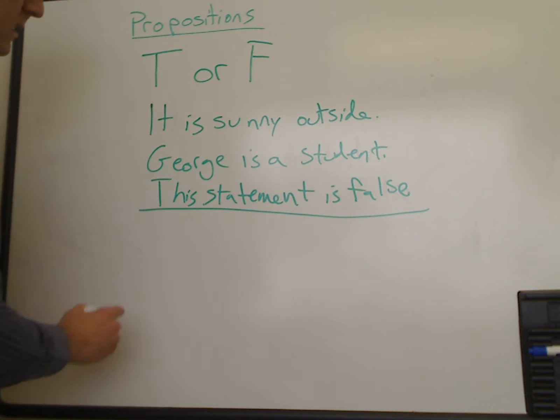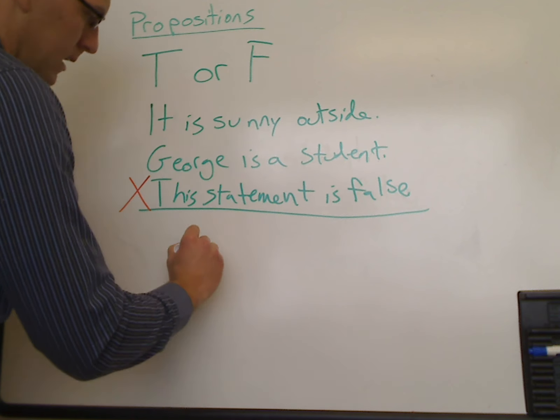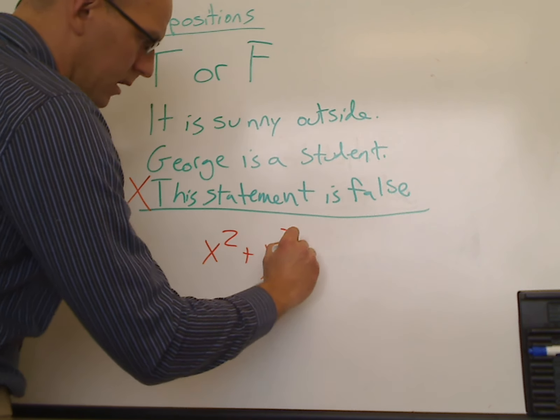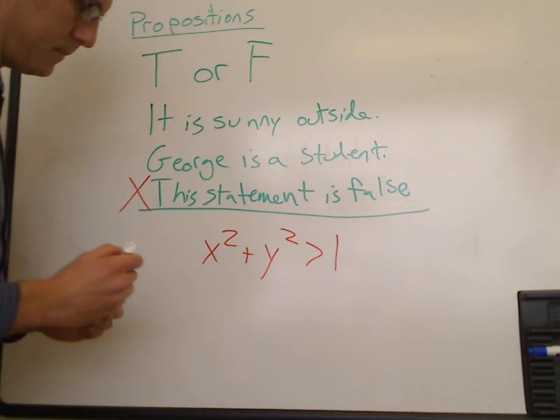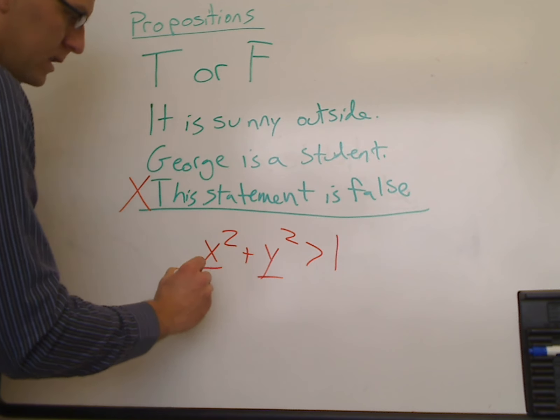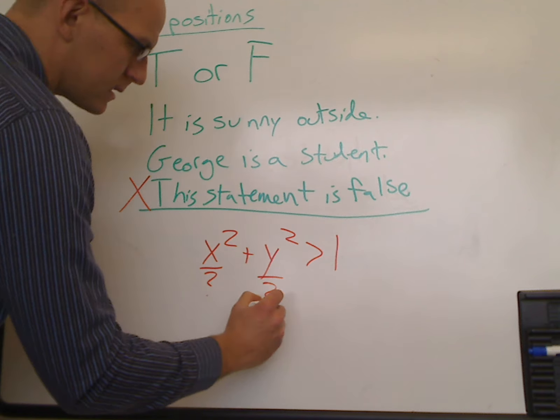Another example of a statement that is not a proposition is x squared plus y squared is greater than 1. Now you might look at this and say, well, this sure seems like it would be a statement. It's either true or false. Either x squared plus y squared is greater than 1 or x squared plus y squared is less than or equal to 1. But it isn't a statement because we don't know what x squared and y squared are. Because we don't know what these are, this is not a statement.